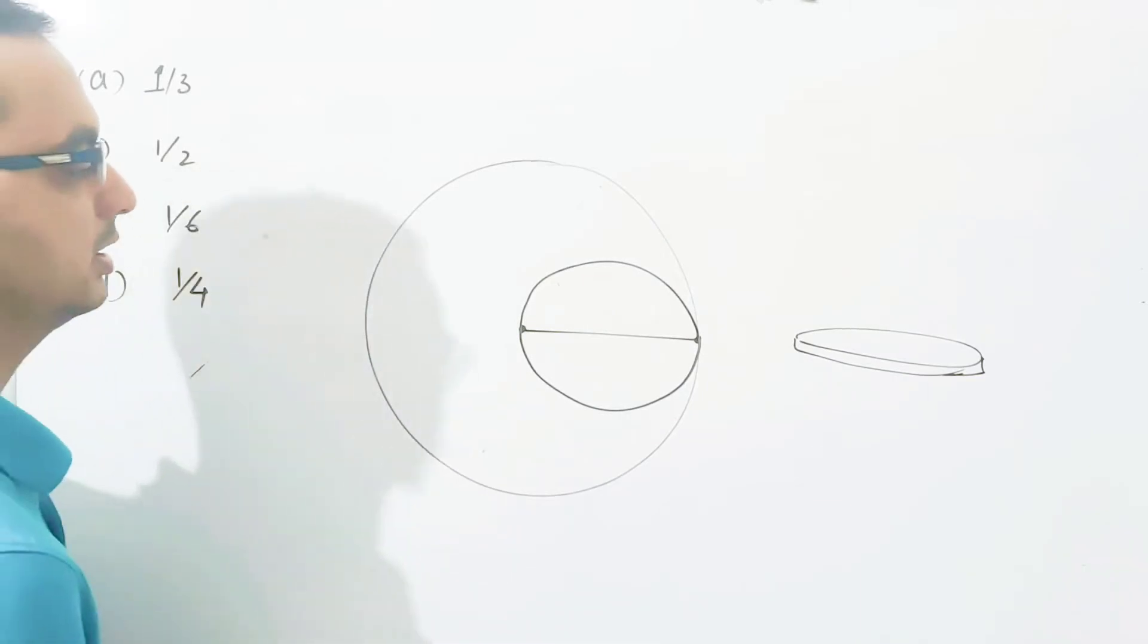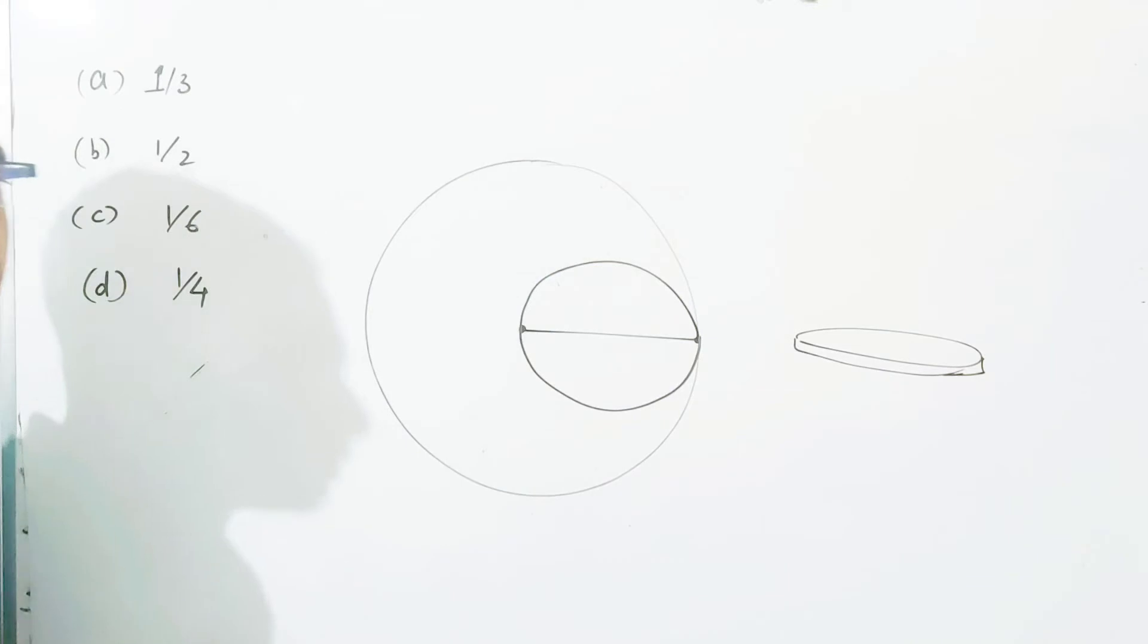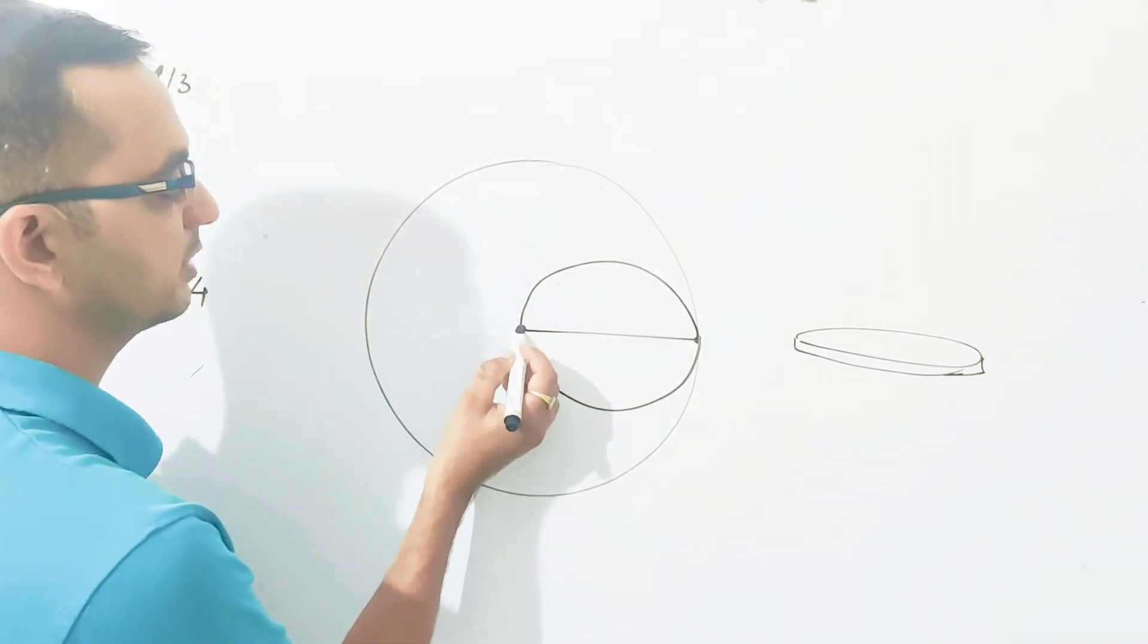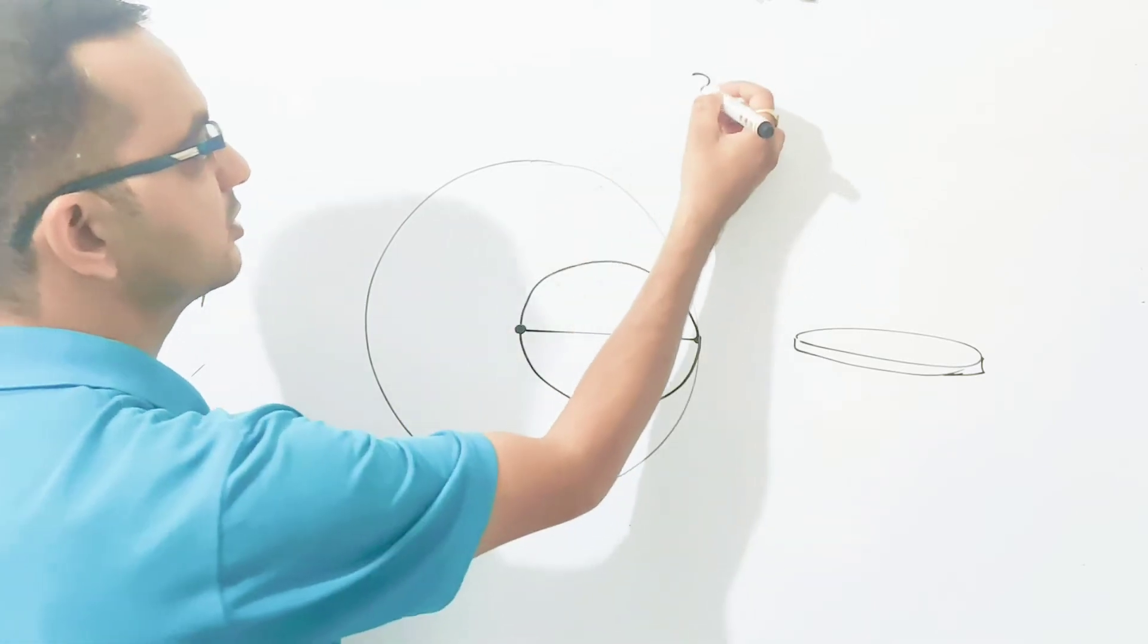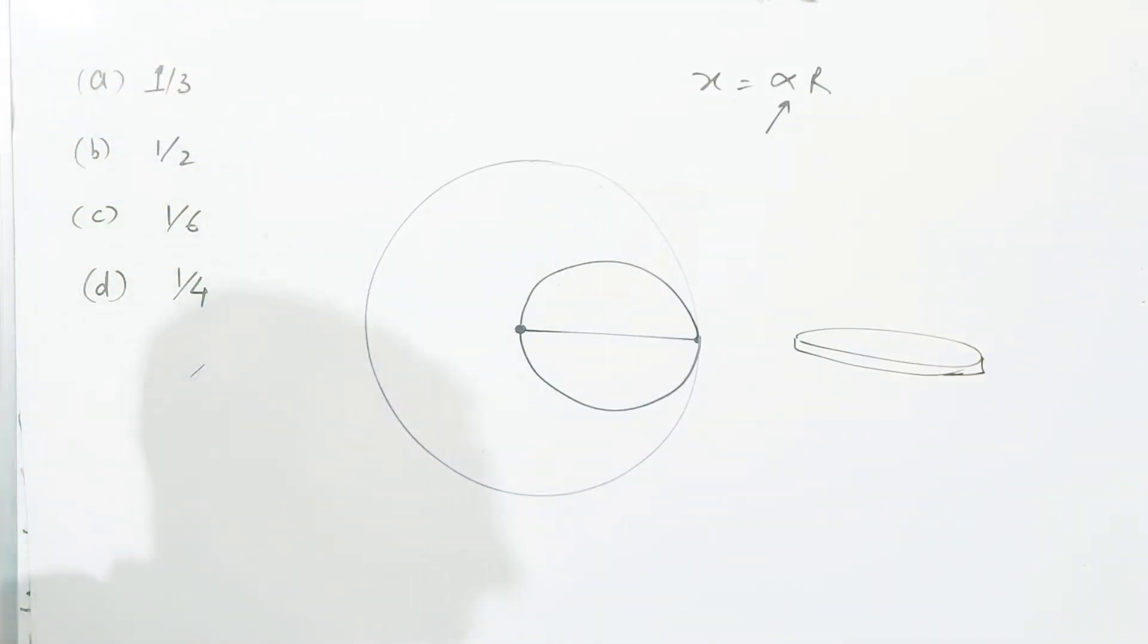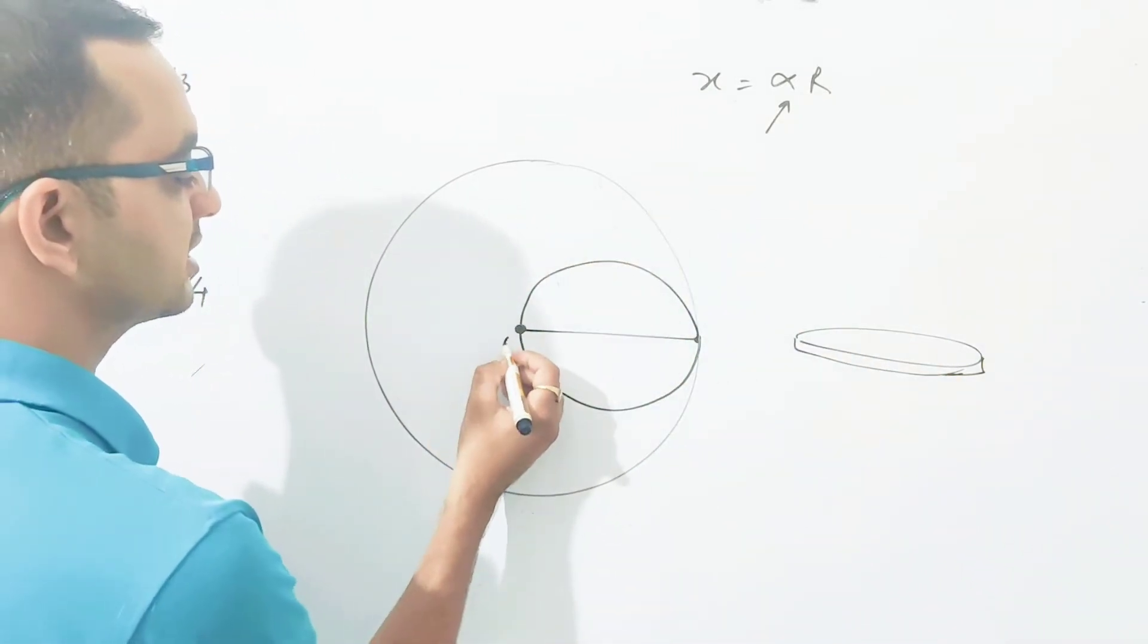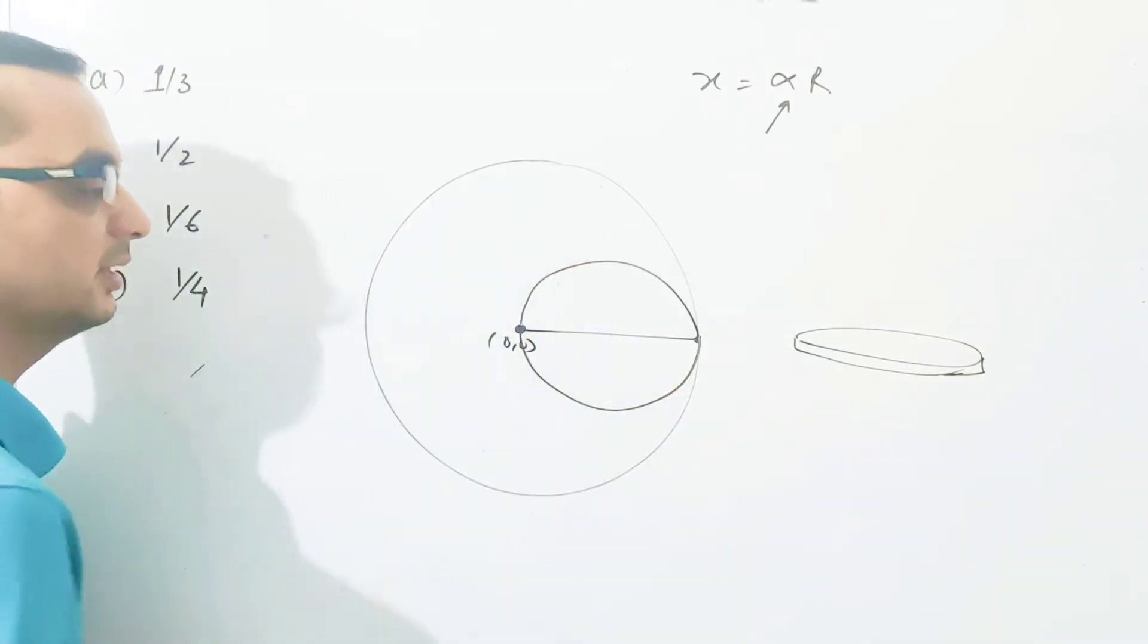Let us find what is the center of mass of the remaining part. The center of mass of the whole system - where is the whole system? At 0,0.